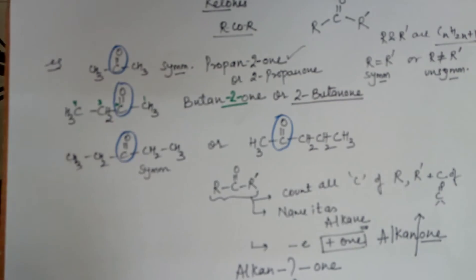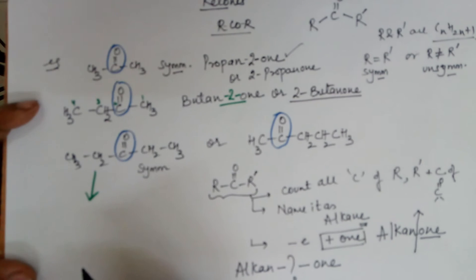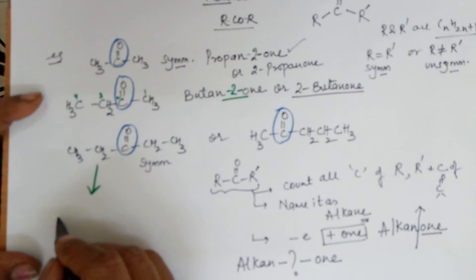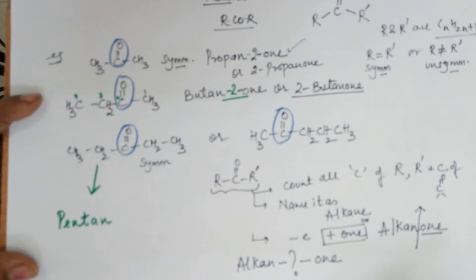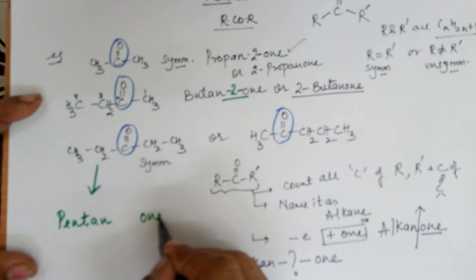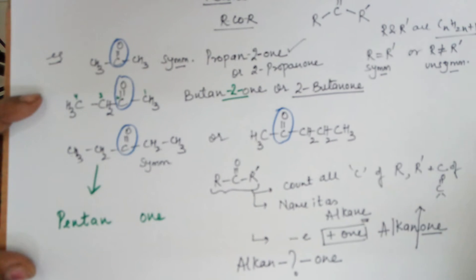Coming to the next example, this one. How many carbons do we have? 1, 2, 3, 4 and 5. So the name has to be pentane. Removing the E. I need to add an O-N. The ketonic group is at what position?